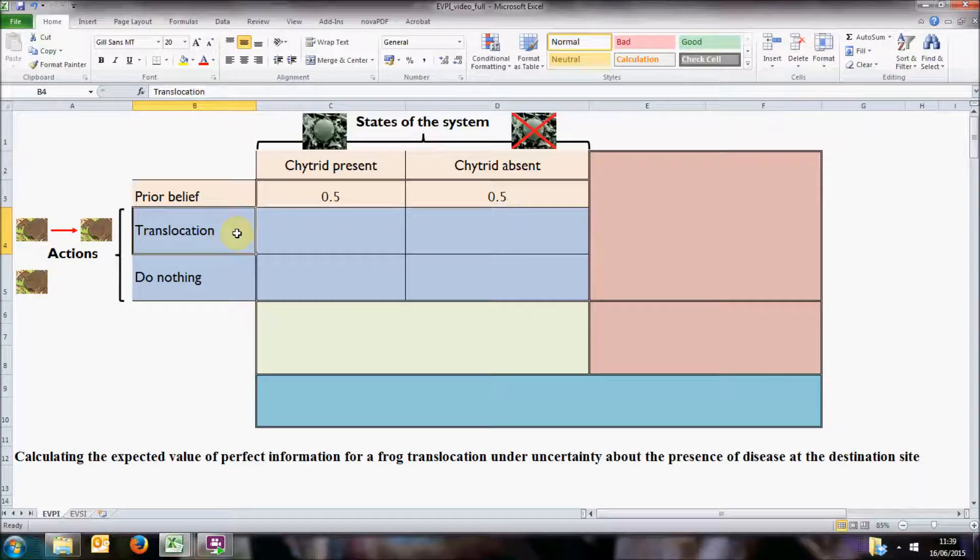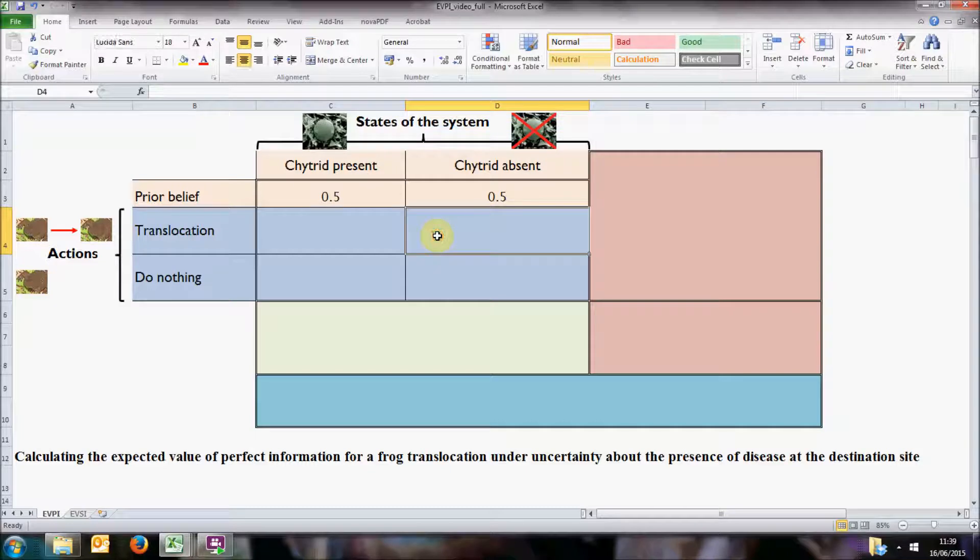Now the outcomes of our actions may differ depending on the true state of the system. For example, if we choose to translocate and chytrid is absent from the new site, these translocating individuals will multiply and we could predict, for example using a population model, we will have a total of 135 individuals across the protected area at the end of the ten years. However, if chytrid is present, the individuals that we have translocated will die, and the existing population could also struggle after the removal of individuals. So we could assume that the model in this case predicts 55 individuals.